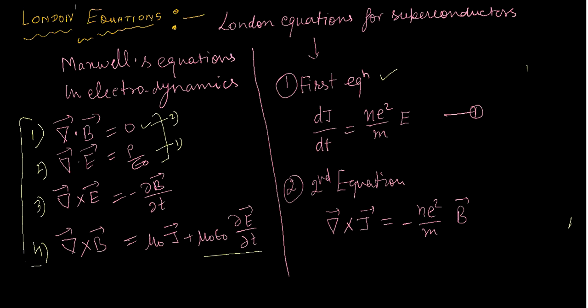These are the two additional equations for superconductors. The first London equation is dJ upon dT equals n e squared upon m times E, where J is the current density, E is the applied electric field, n is the total number of electrons, e is the charge of the electron, and m is the mass of the electron. The second equation is the curl of the supercurrent density: del cross J_s equals n_s e squared upon m times B, where B is the magnetic flux density.